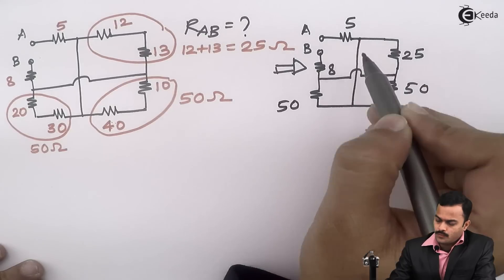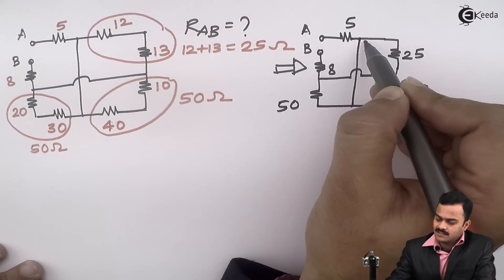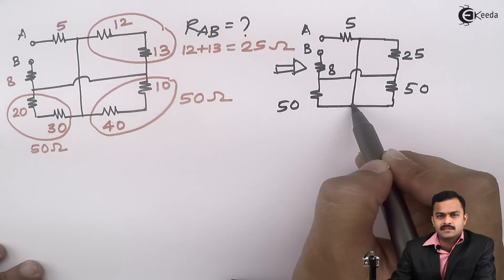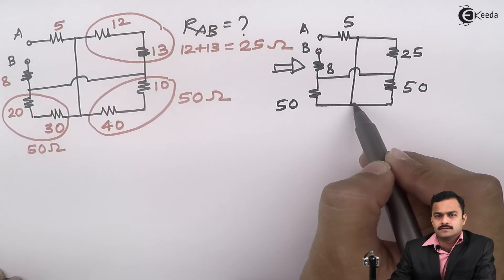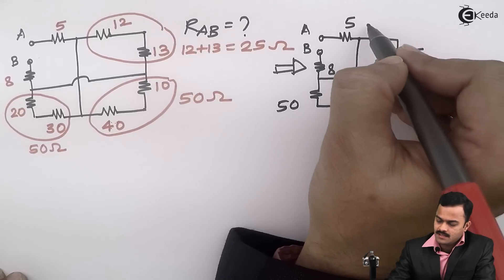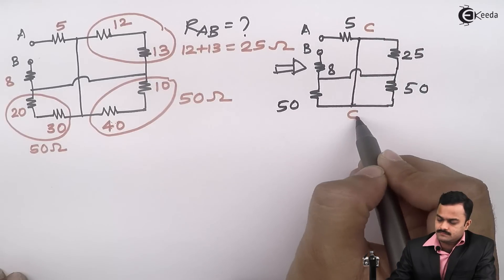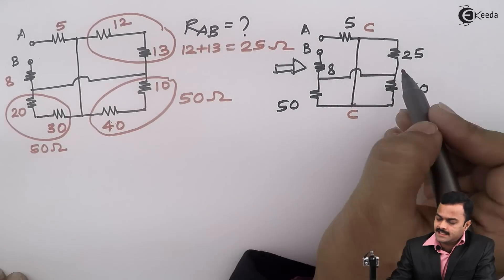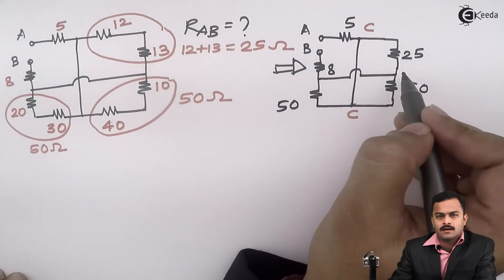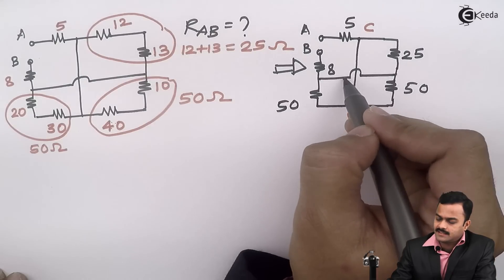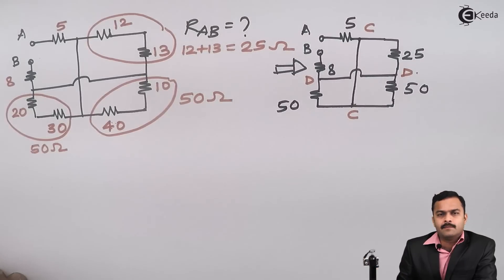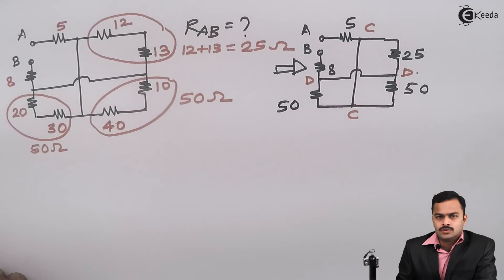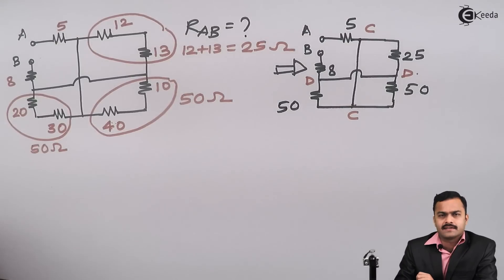Now, whenever I see these two points of the circuit, I can say there is nothing connected between these two points, it is a simple wire. So I can say these two points are nothing but the same point, so I will name it as C. Same way I can say these two points are also same since nothing is connected except a wire. I named it as D. So I will come to know here in all I will have four points. So I will redraw the circuit.